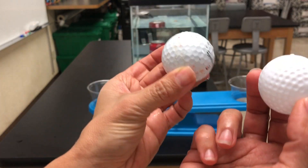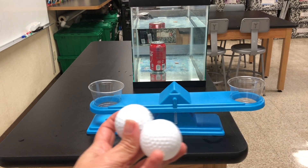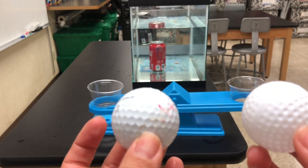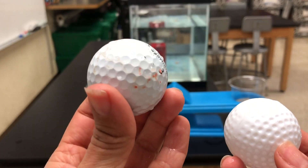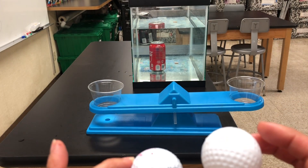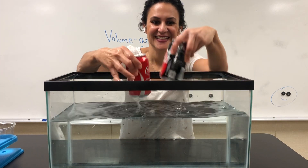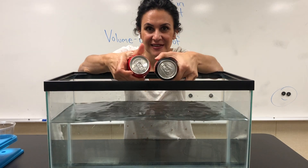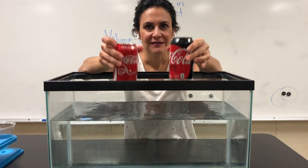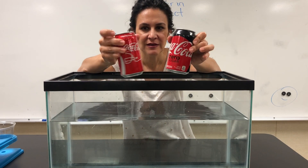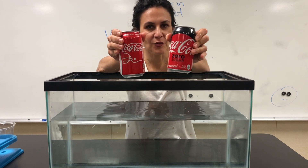That makes it more dense. The word density refers to how much mass and volume an object has. This object has more mass than this object, but the volumes are the same. Now what about these two cans? These are identical cans, the same size, neither one is open — they're both sealed. They both feel about the same mass, but why is one sinking and one floating? Remember, one is regular Coke and one is Coke Zero.